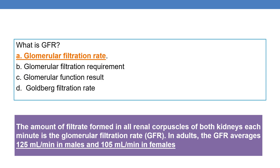What is GFR? GFR stands for glomerular filtration rate — the amount of filtrate formed in all renal corpuscles of both kidneys each minute. In adults, the GFR averages 125 ml per minute in males and 105 ml per minute in females.